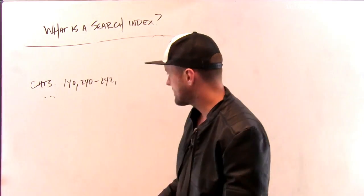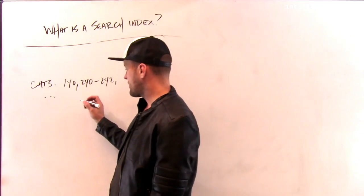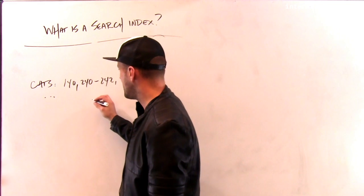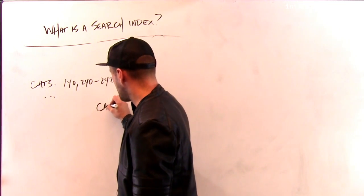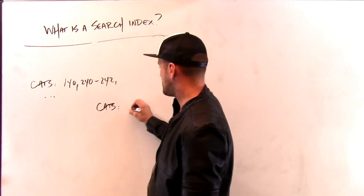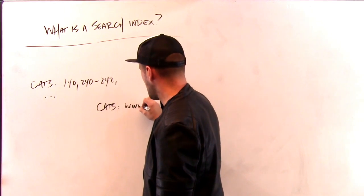A search index is similar. It's a little bit different. So a search index online might map the same term, cats, and it might map it to a bunch of pages about cats.